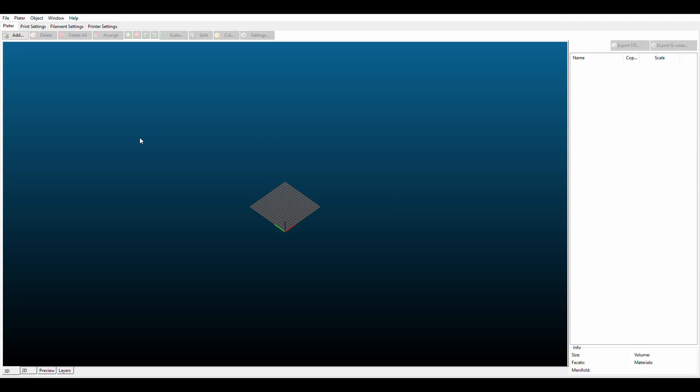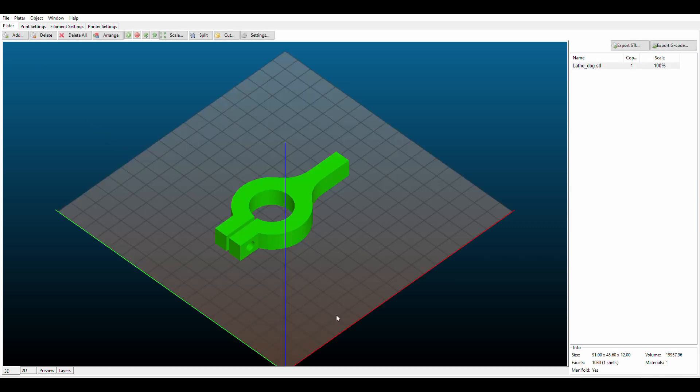Here we are in slicer. The first thing we do is add that document we just created, that stereo lithography file of the lathe dog. It looks like that. There's nothing we need to change with the alignment or anything.